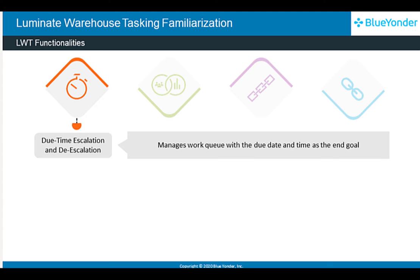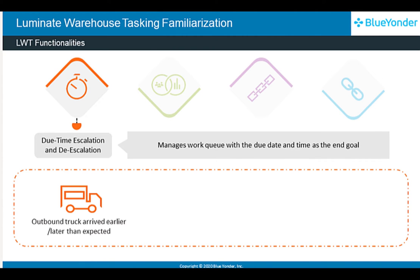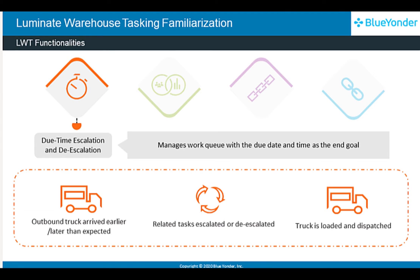LWT manages the work queue with the due date and time as the end goal, and escalates or de-escalates other tasks appropriately. For any given task, LWT considers the appointment date first. If the appointment date is unavailable, it identifies the least early shipment date, or late shipment date, early delivery date, late delivery date, or buffer, and sets the due time. This helps assign task priority by escalating or de-escalating tasks to take care of the immediate shipment or delivery.